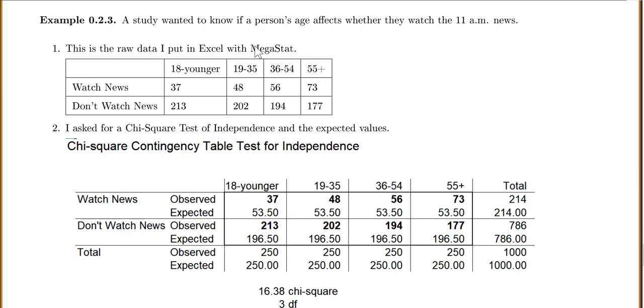This is the raw data that I put in Excel with Megastat. You can see my columns here are the ages: 18 and younger, 19 to 35, 36 to 54, and 55 plus. They're broken down into the categories of either watch news or don't watch news. I put this in Excel just like that.